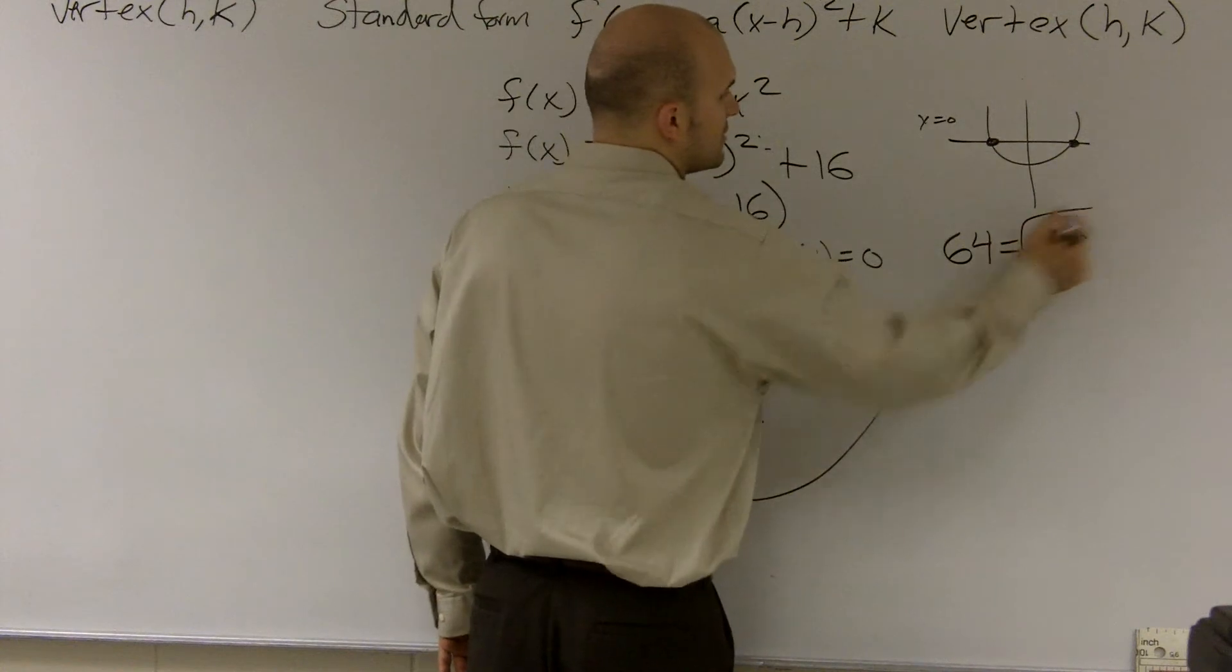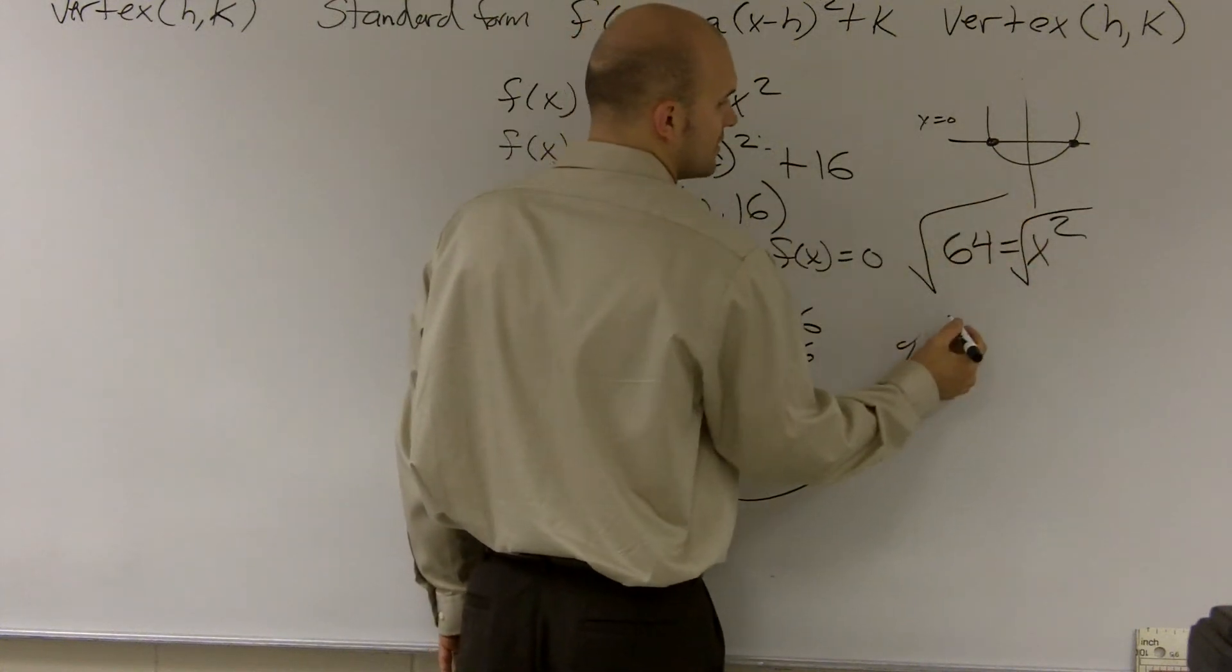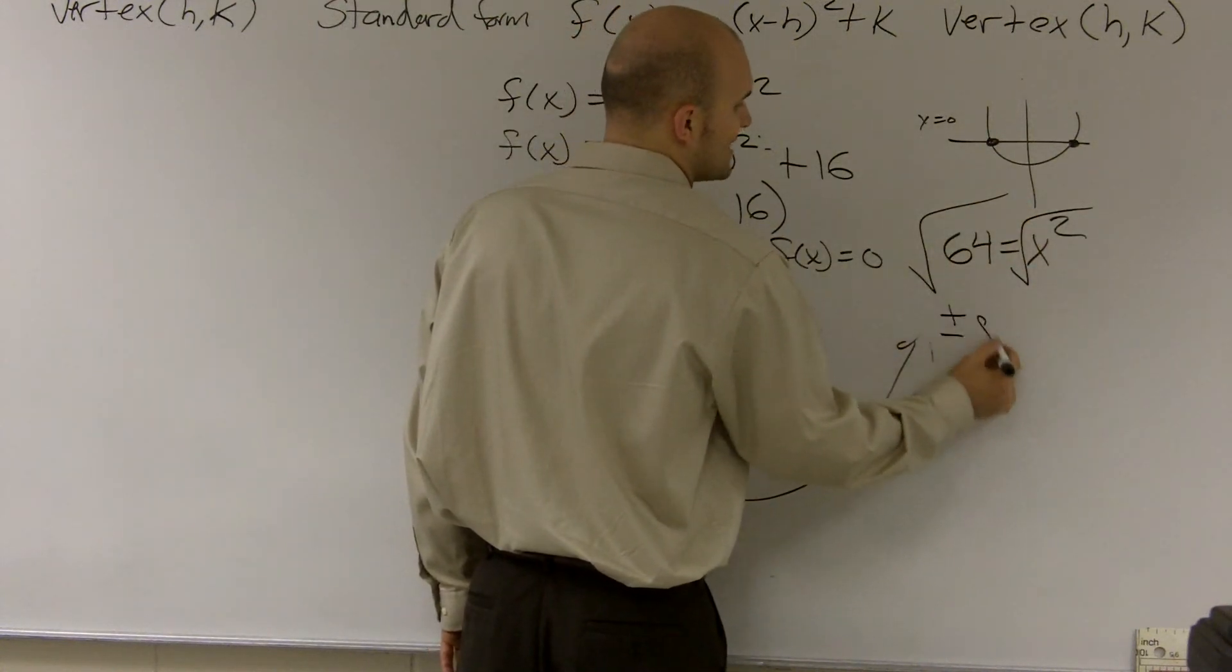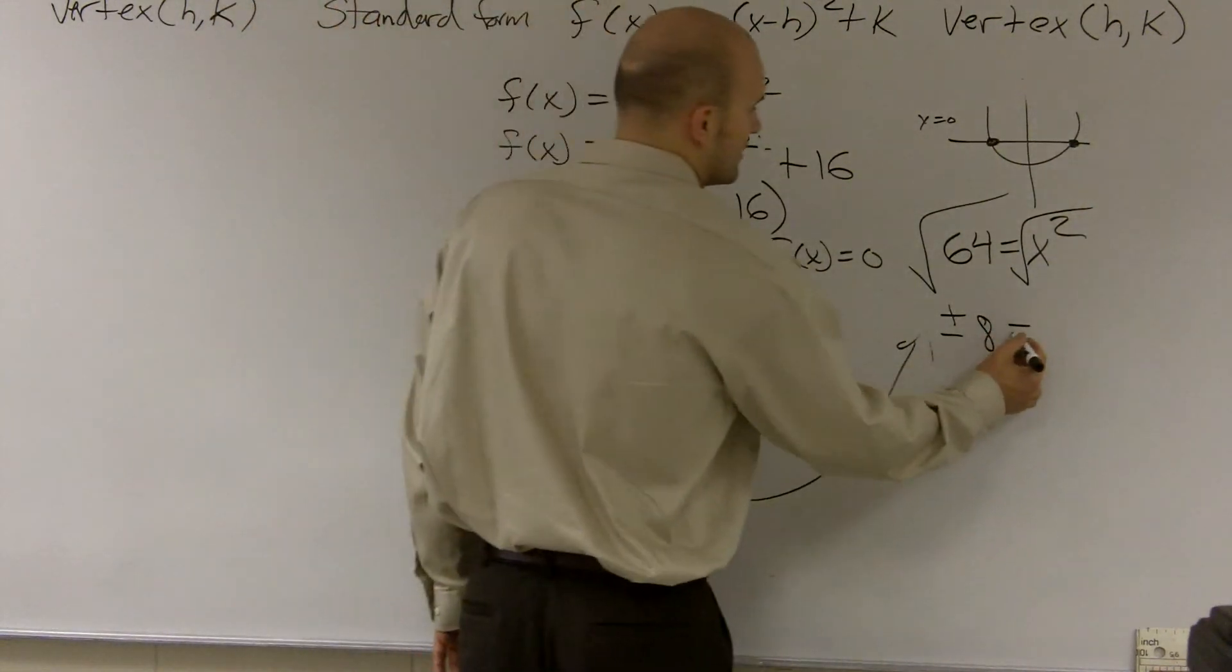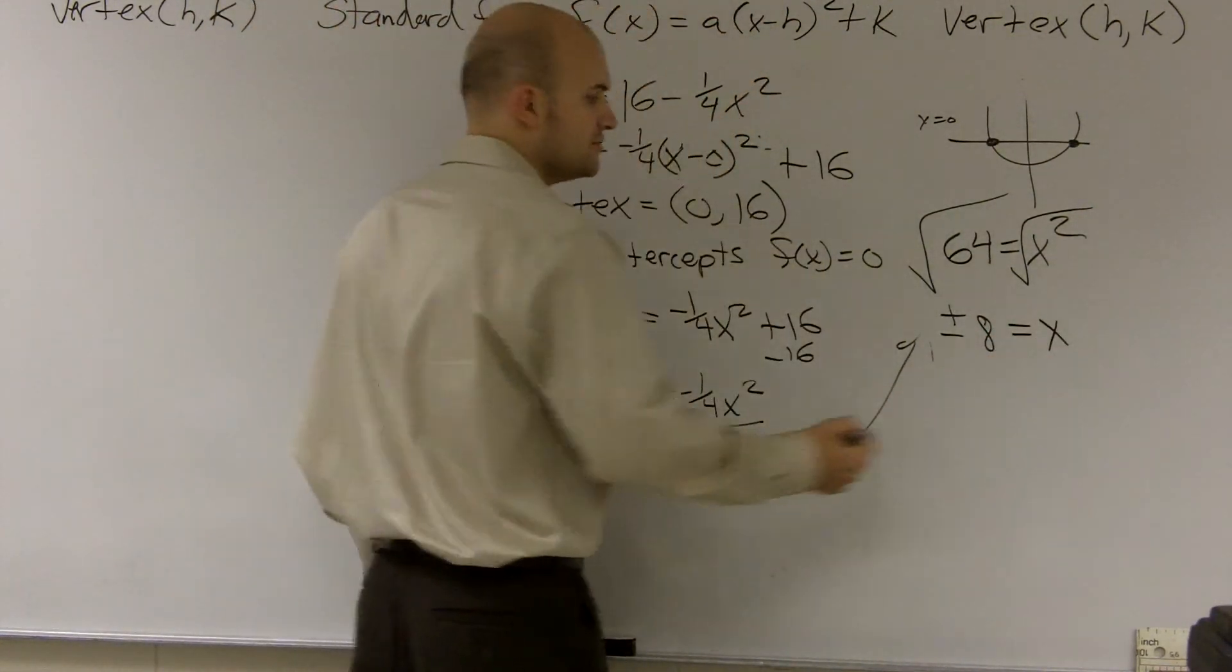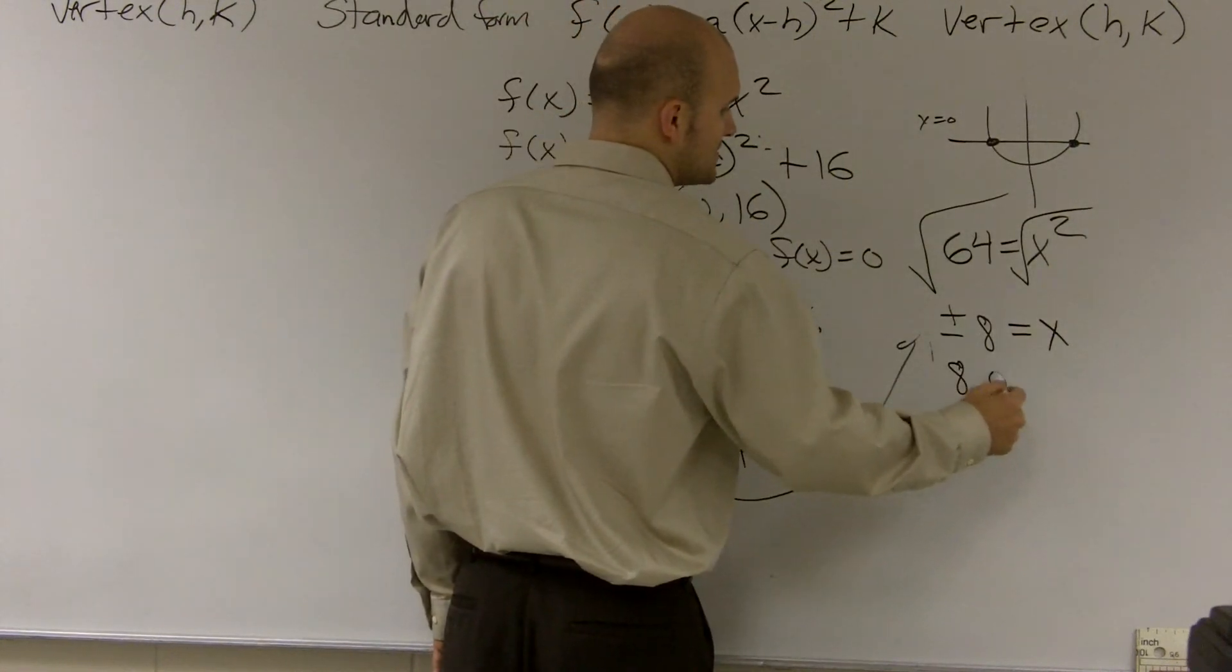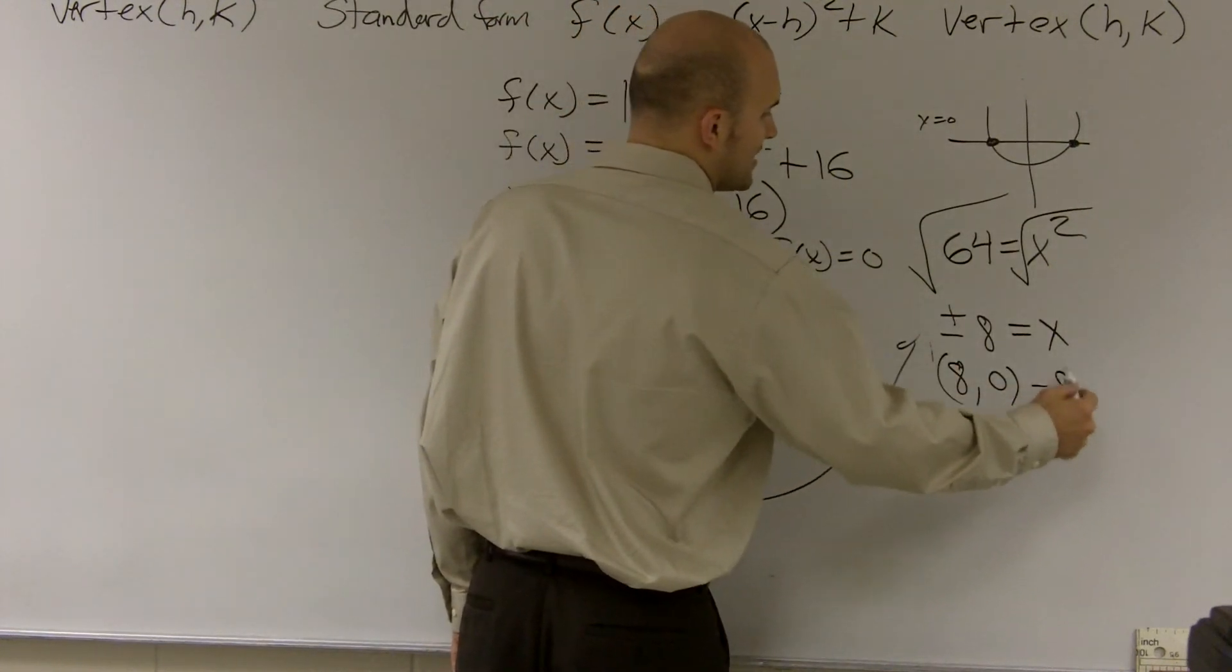So now we have x squared equals sixty-four. To get rid of the root, you take the square root, and therefore I have plus or minus eight, because remember whenever you take a root of a number, you're going to have plus or minus eight equals x. So therefore our two intercepts are going to be eight comma zero and negative eight comma zero.